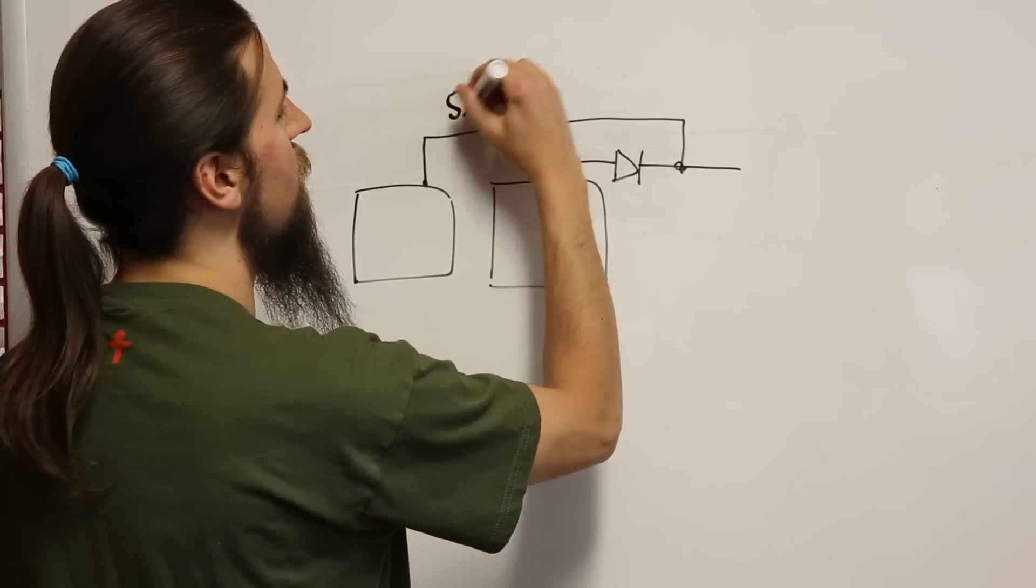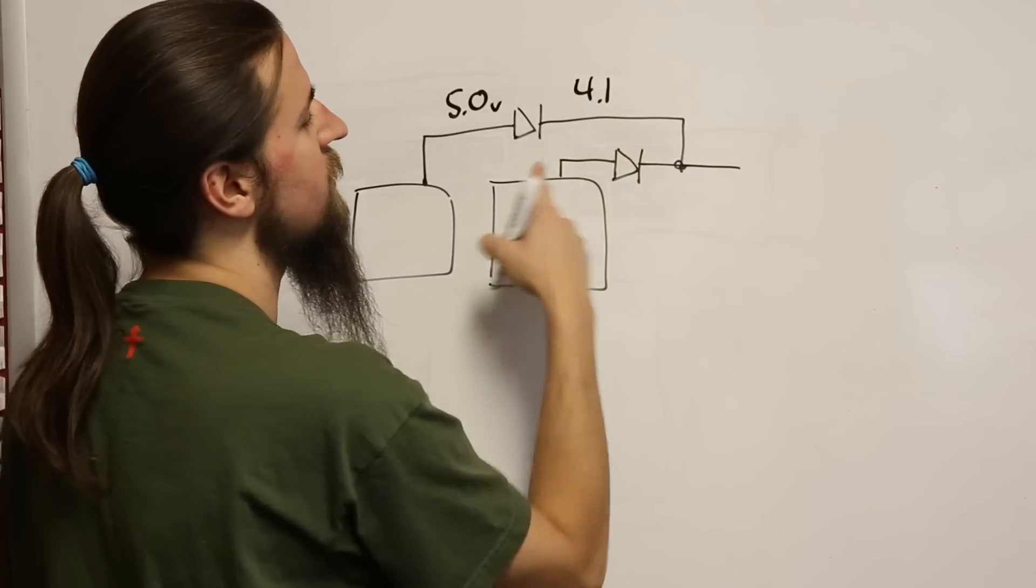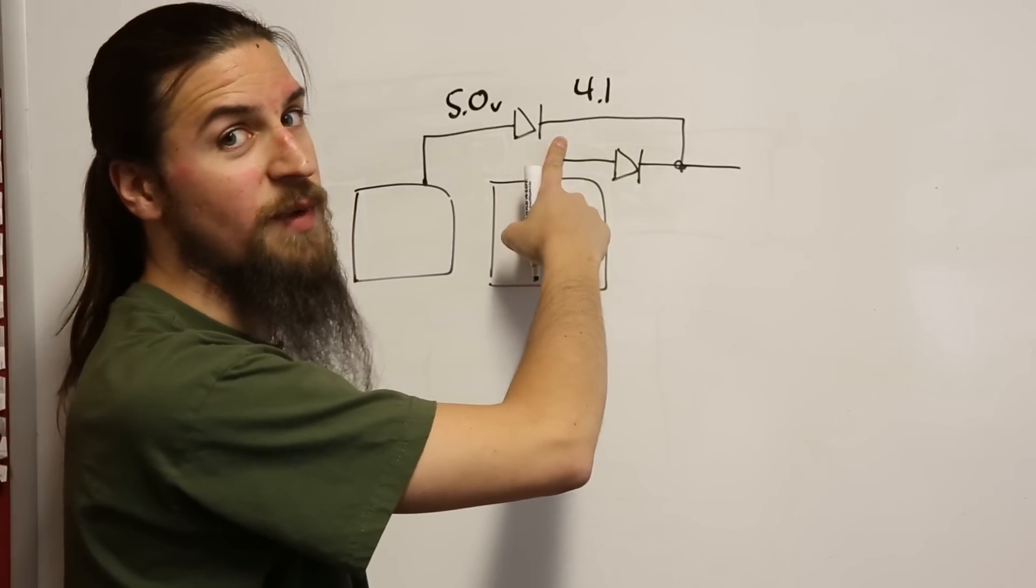If we have 5.0 volts on the output, we're going to see 4.1 volts on the other side, which won't be enough for the pie.